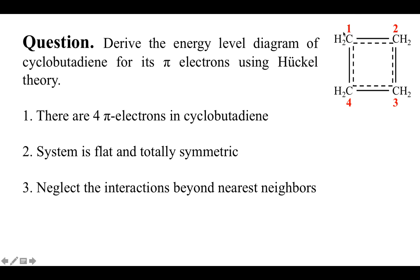The last assumption is that we neglect all interactions beyond nearest neighbors. So electrons on site one interact with site two and site four, but we ignore the interaction between site one and site three, and similarly for all other sites. In the original problem you were given the Hamiltonian, but in this problem we want to derive the Hamiltonian first, and then based on that derive the energy level diagram.